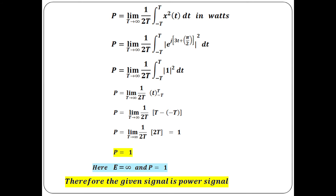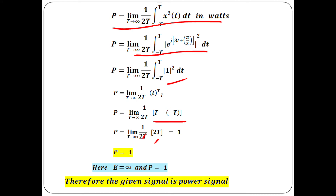Write the power formula and substitute the exponential value, which gives 1. The integral from −T to T of 1 dt = 2T. Since we have 1/(2T) in the formula, 2T cancels and we get power = 1. Since energy is infinity and power is the finite value 1, the given signal is a power signal.